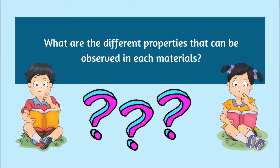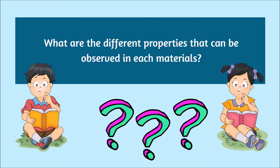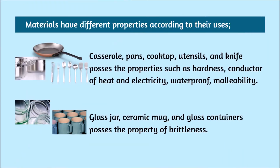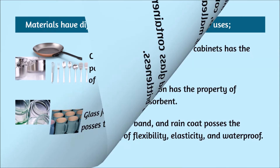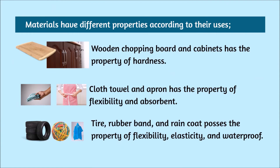So what are the different properties that can be observed in each material? Casserole, pans, cooktop, utensils, and knife possess the properties of hardness, conductor of heat and electricity, waterproof, and malleability. Glass jar, ceramic mug, and glass containers possess the property of brittleness. Wooden chopping board and cabinets have the property of hardness. Cloth towel and apron have the property of flexibility and absorbent. Tire, rubber band, and raincoat possess the properties of flexibility, elasticity, and waterproof.